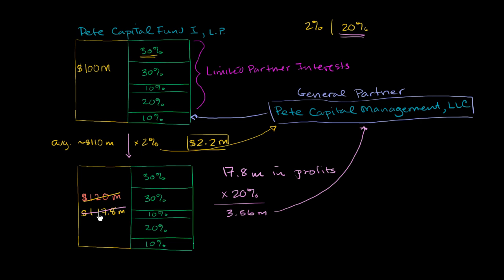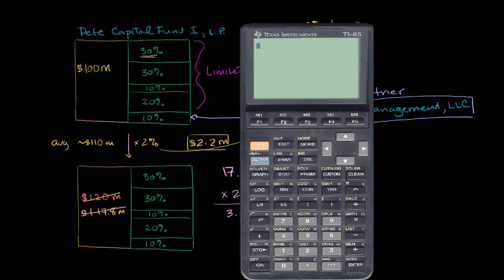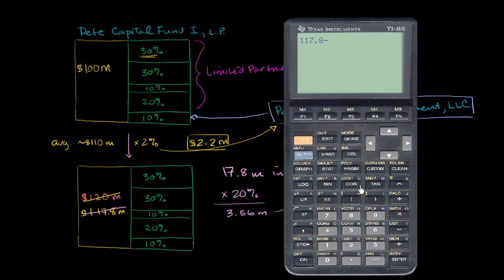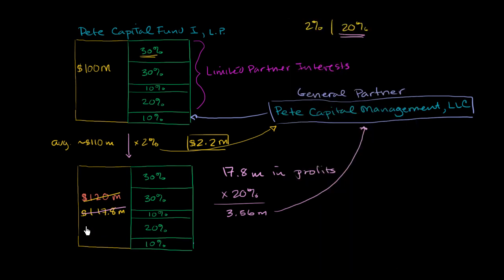So we'll be left with, let's see, we have 117.8 minus 3.56, right? Minus 3.56 gives us 114.24. So over here, what's left in the fund is 114.24.